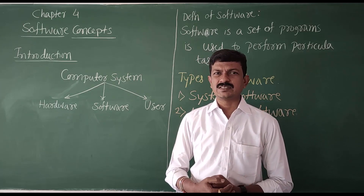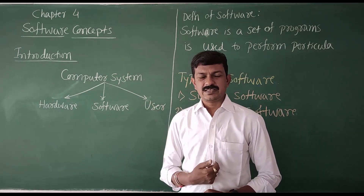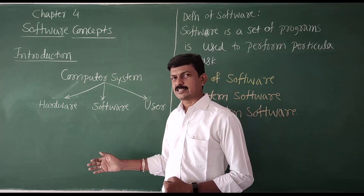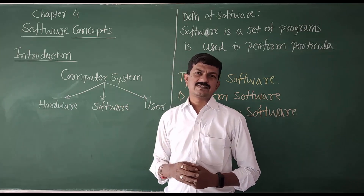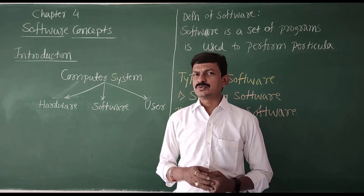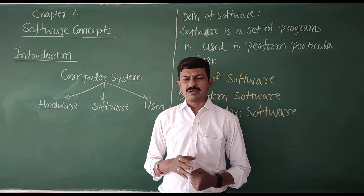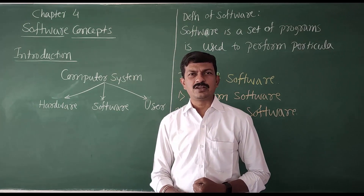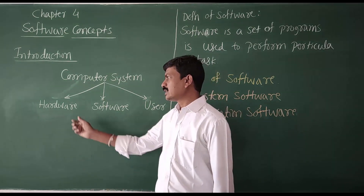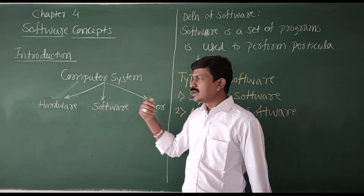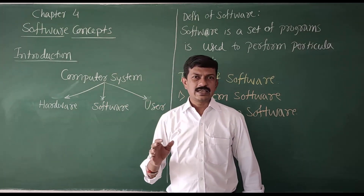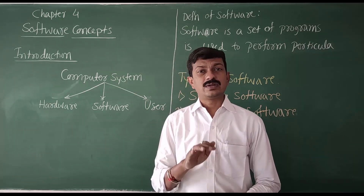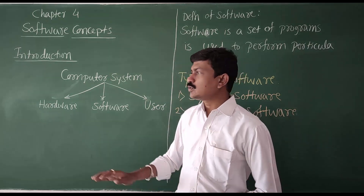When we discuss this chapter, we are going to cover software types, characteristics, and classification. We will also define the computer system, which is composed of hardware, software, and users.